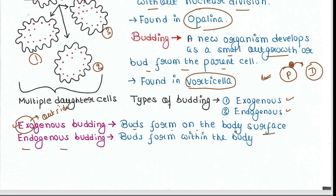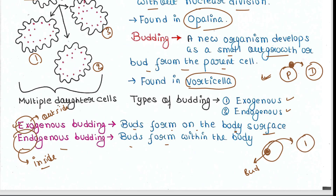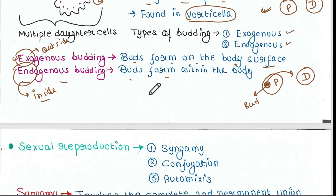In endogenous budding, endo means inside, so buds form within the body. The bud within the cell becomes the daughter cell. So these are the different types of asexual reproduction.